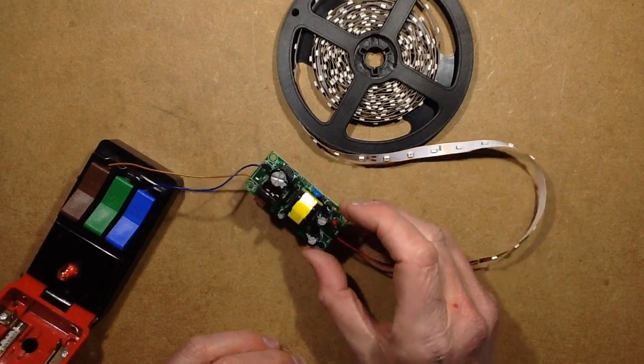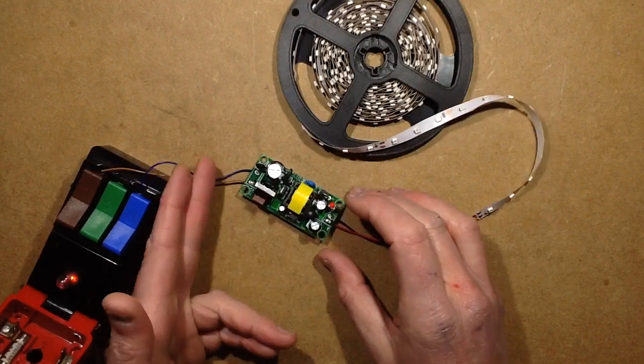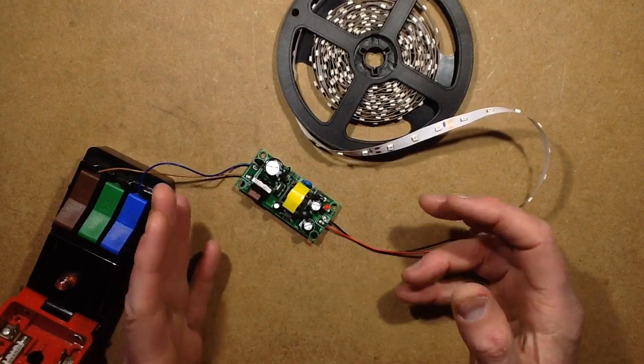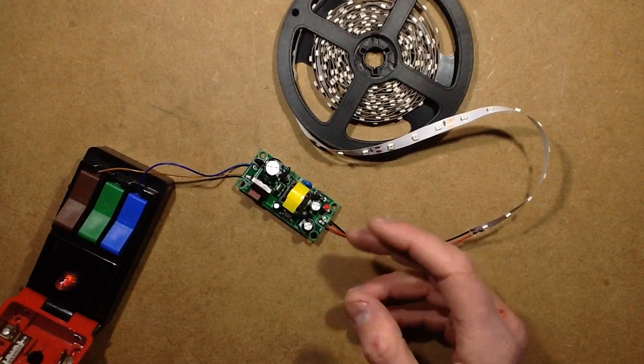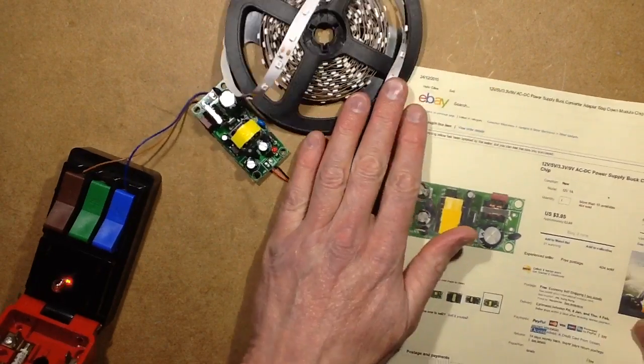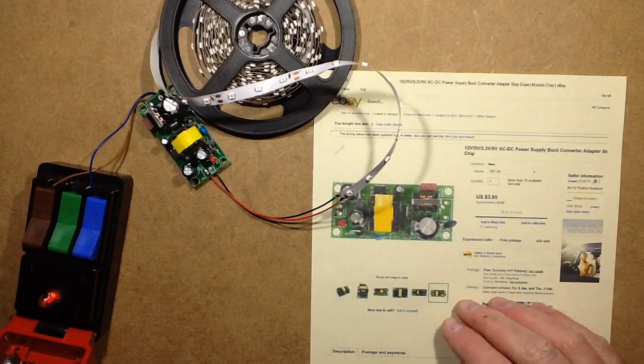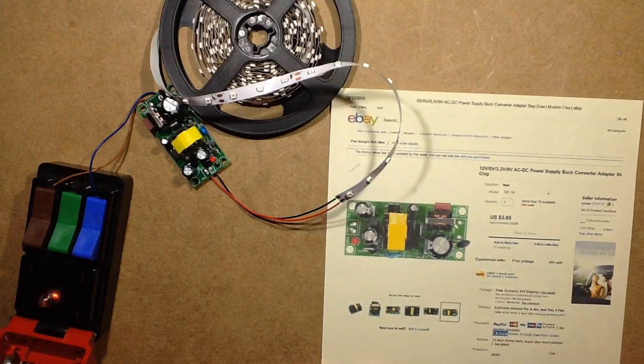Someone was asking about these little power supply modules being sold on eBay. They're basically little switchboard power supplies that convert from mains to low voltage. You get them in various ratings like 5 volt 1 amp, 12 volt 1 amp, and this one came from a supplier called YNAN. This is a 12 volt 1 amp one. I just thought it'd be a good one to check.